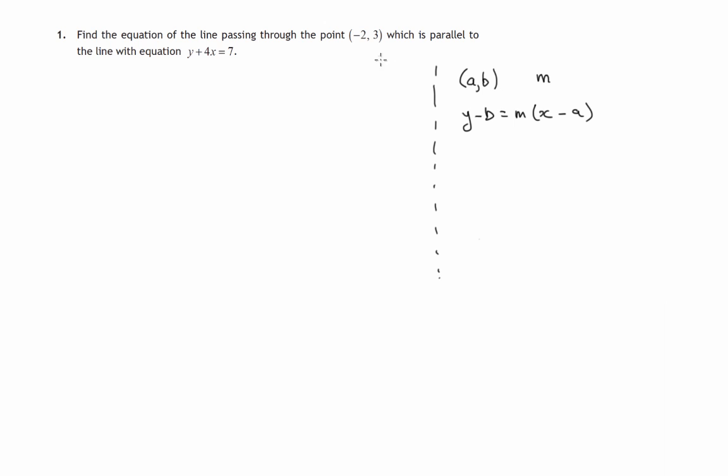We certainly know a point it passes through, (-2,3), but we don't yet know its gradient. However, if it's parallel to another line, two lines that are parallel have the same gradient. So let's look at y plus 4x equals 7.